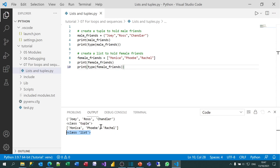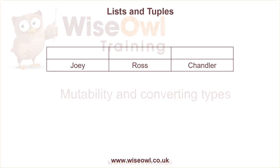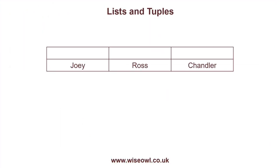What we'll now do is look at the difference between them. Whether you have a list or a tuple, you can refer to any item within it by its index number. The thing to watch out for is that in Python, as in many programming languages, everything starts with zero. So in our example of the male friends tuple, Jerry is the zeroth element, Russ is the first, and Chandler is the second. There is no third element.